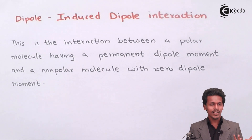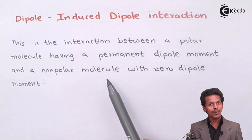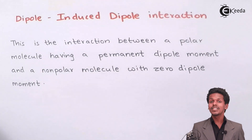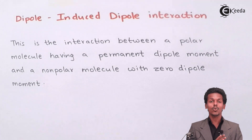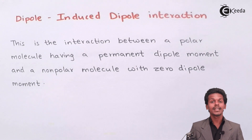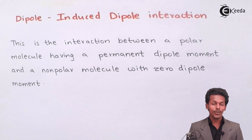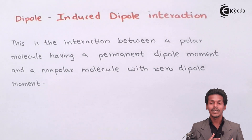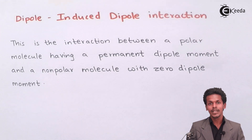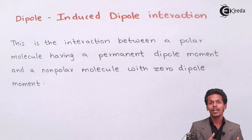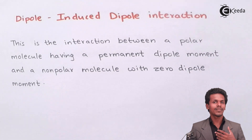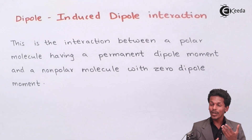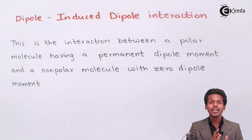This is the interaction between a polar molecule and a non-polar molecule which has a zero dipole moment. Non-polar molecules are those which don't have a permanent dipole moment — their dipole moment is zero. For example, methane doesn't possess a partially positive or partially negative charge. Similarly, N2, O2, and H2 gases are non-polar molecules that don't have a dipole moment greater than zero.